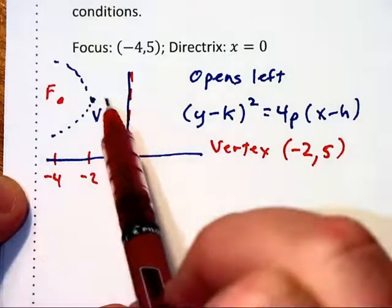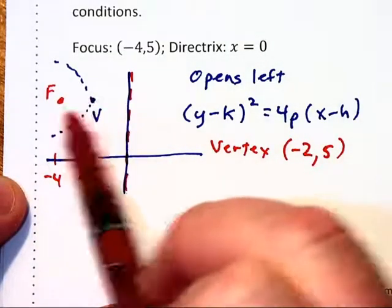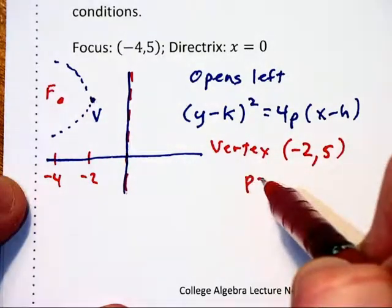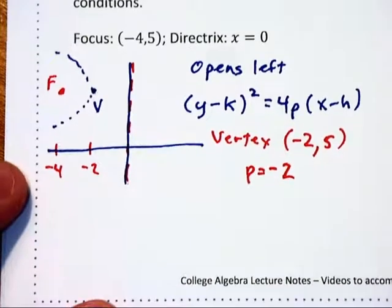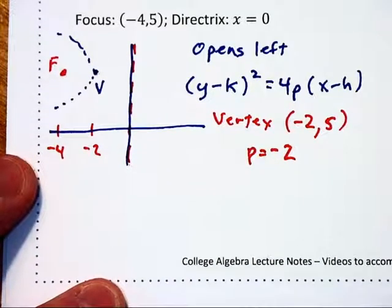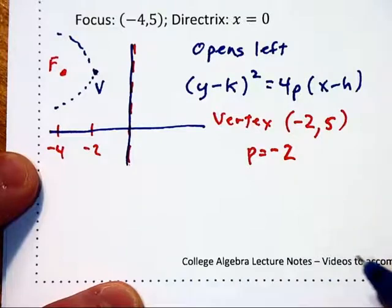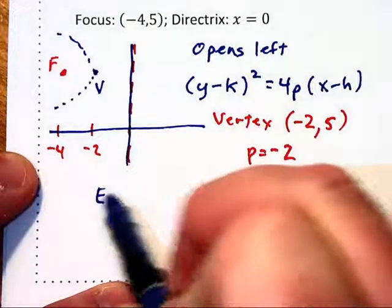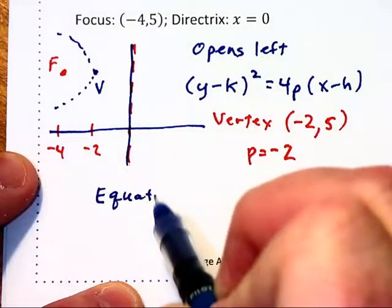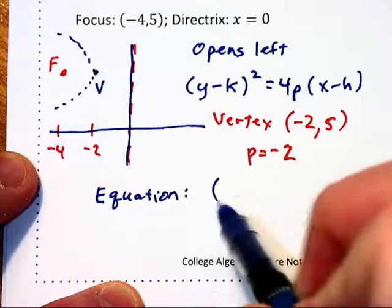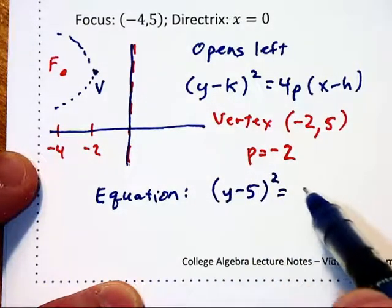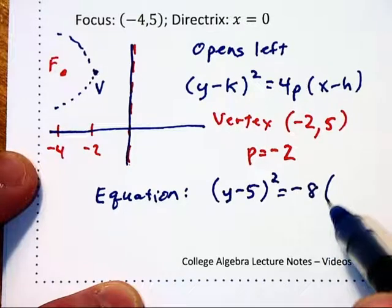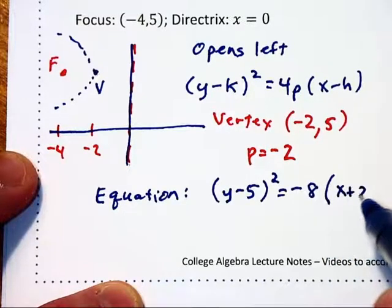And since it is two units from vertex to focus or vertex to directrix, p is going to equal negative two. I need to put negative there because this is opening to the left. Substituting both of those into the equation, we get y minus five quantity squared equals negative eight times x plus two.